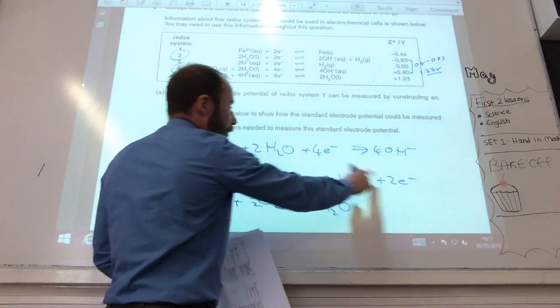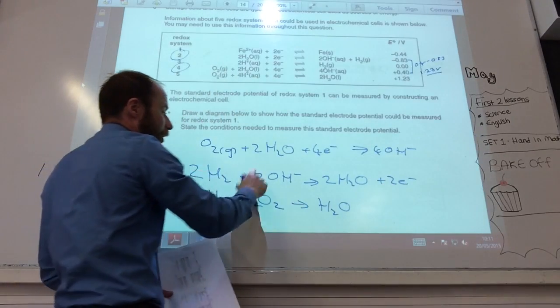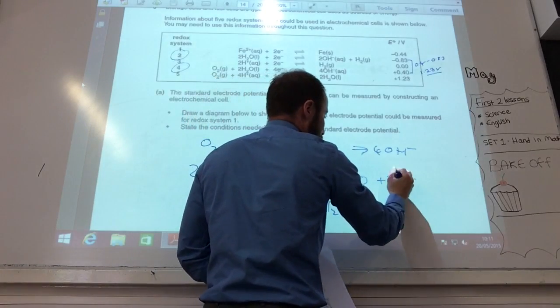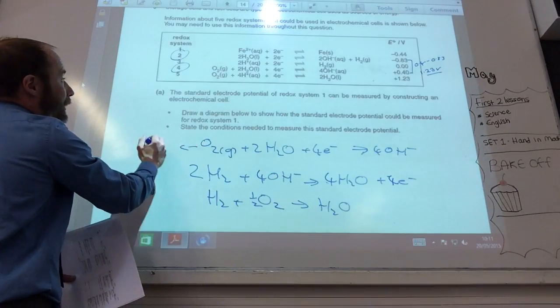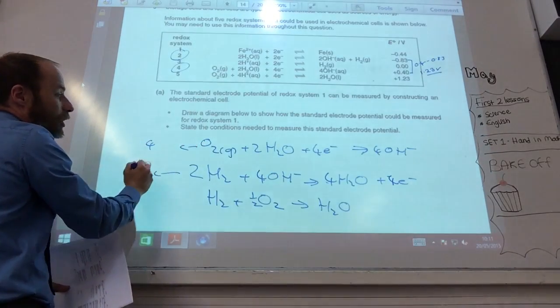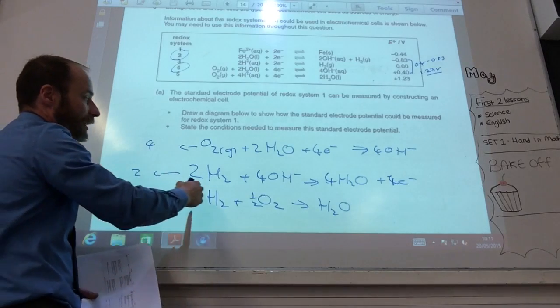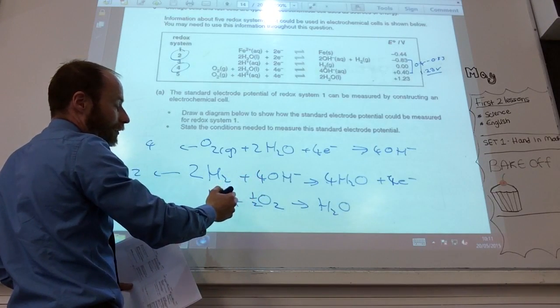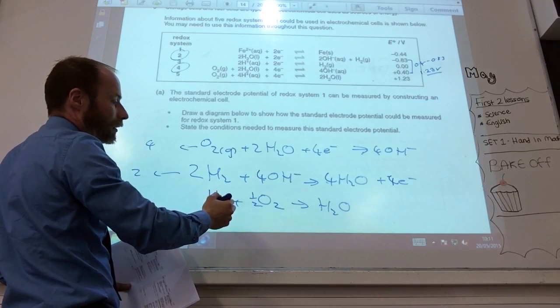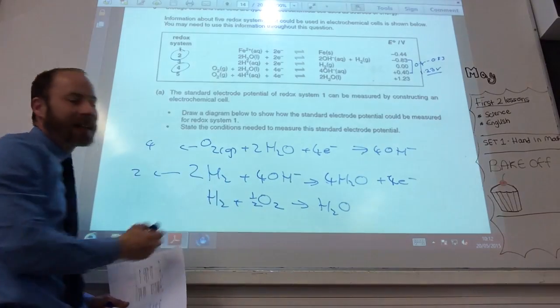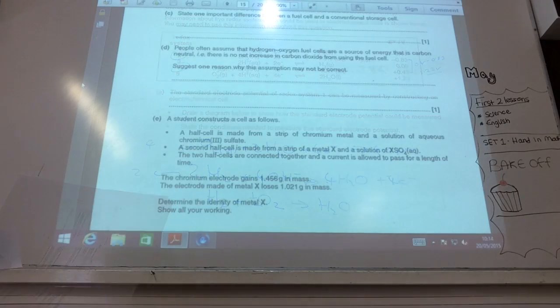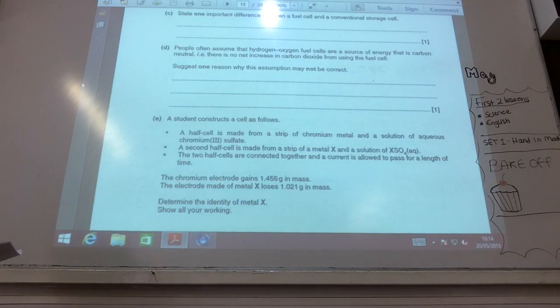Okay, so that's got two electrons on. So I've got to times that one by 2. And that's number 4 and that's number 2. That one there is number 4. That one there is number 2 that I've reversed. I add them together. Can you see now? And they're the two half equations. Yeah, and then I just add them together. You have to balance the electrons.